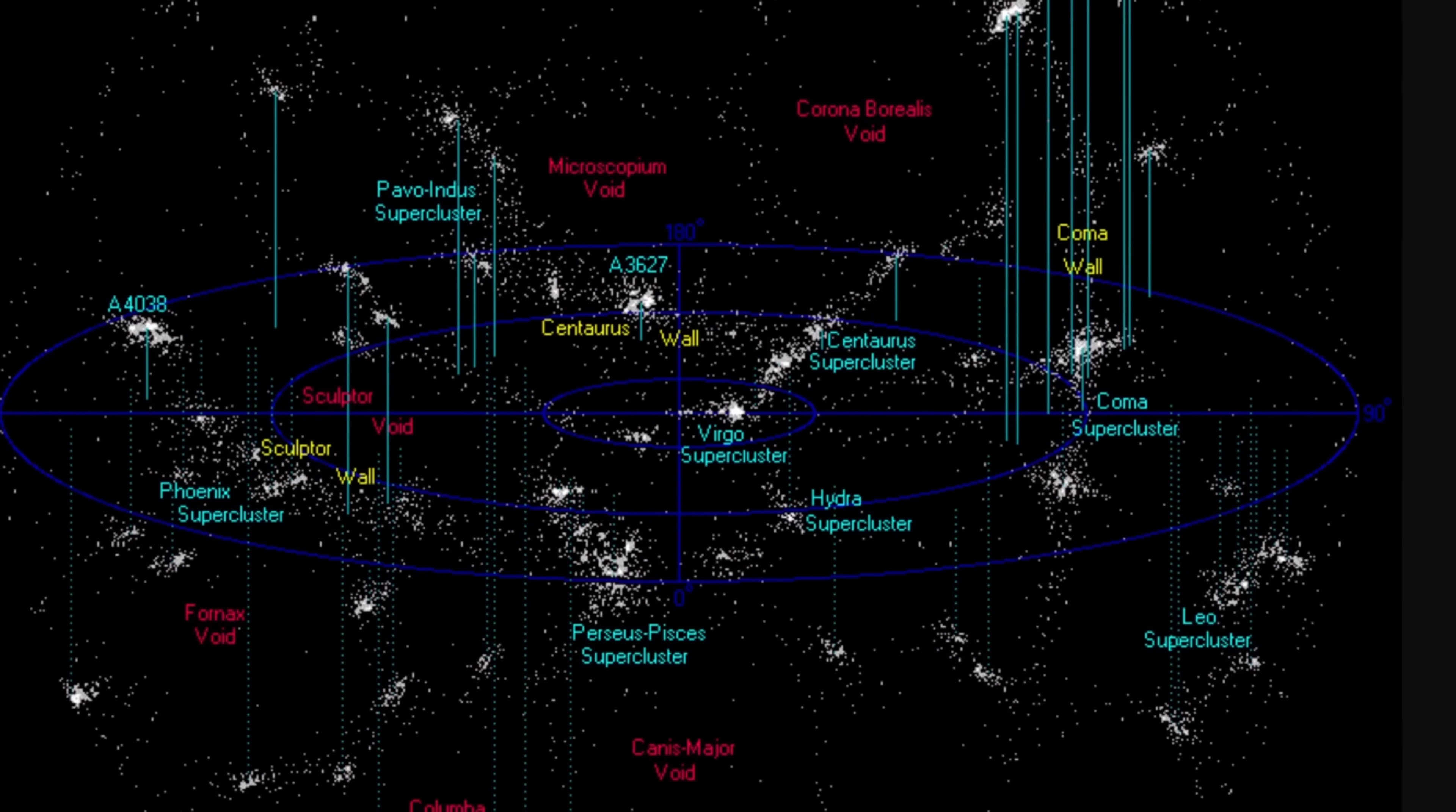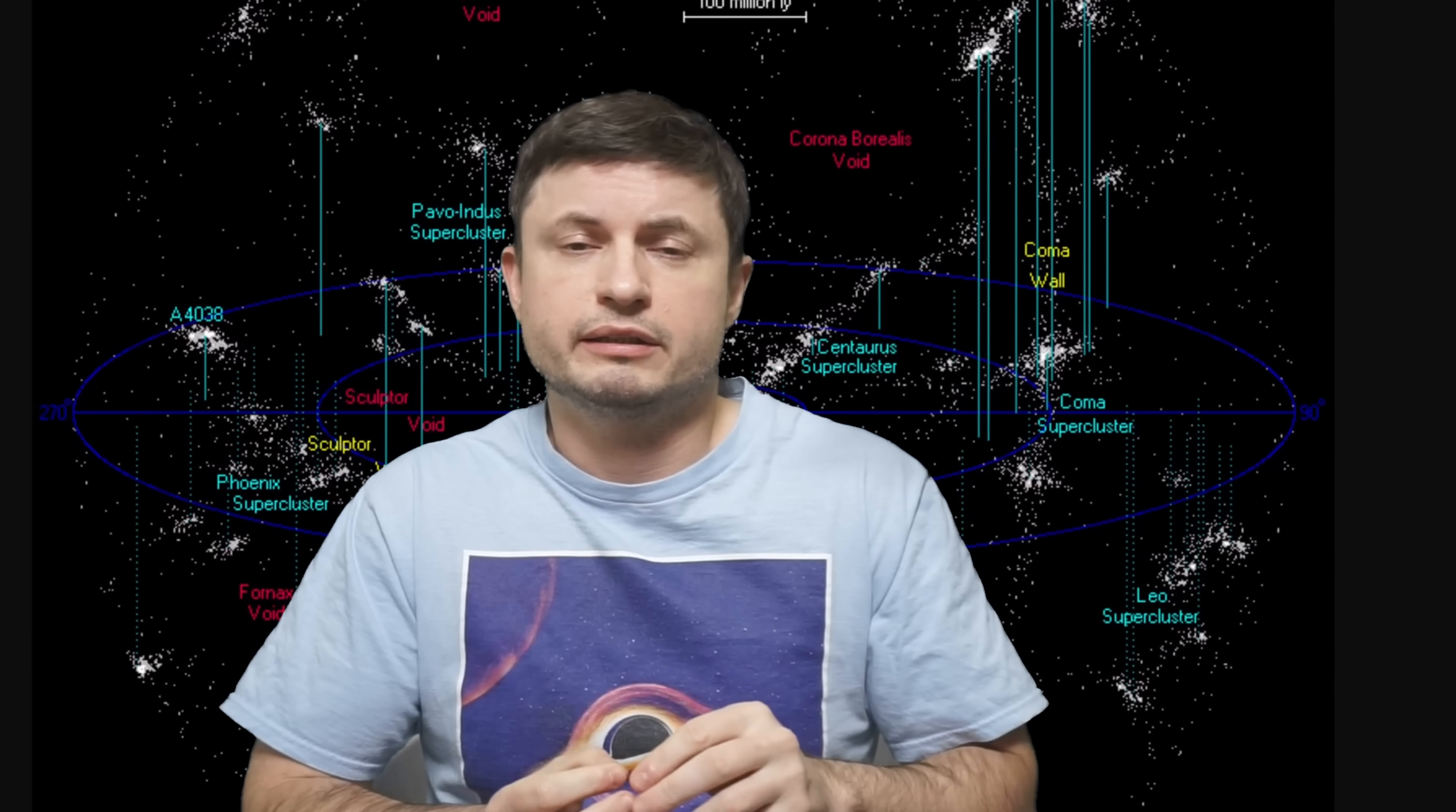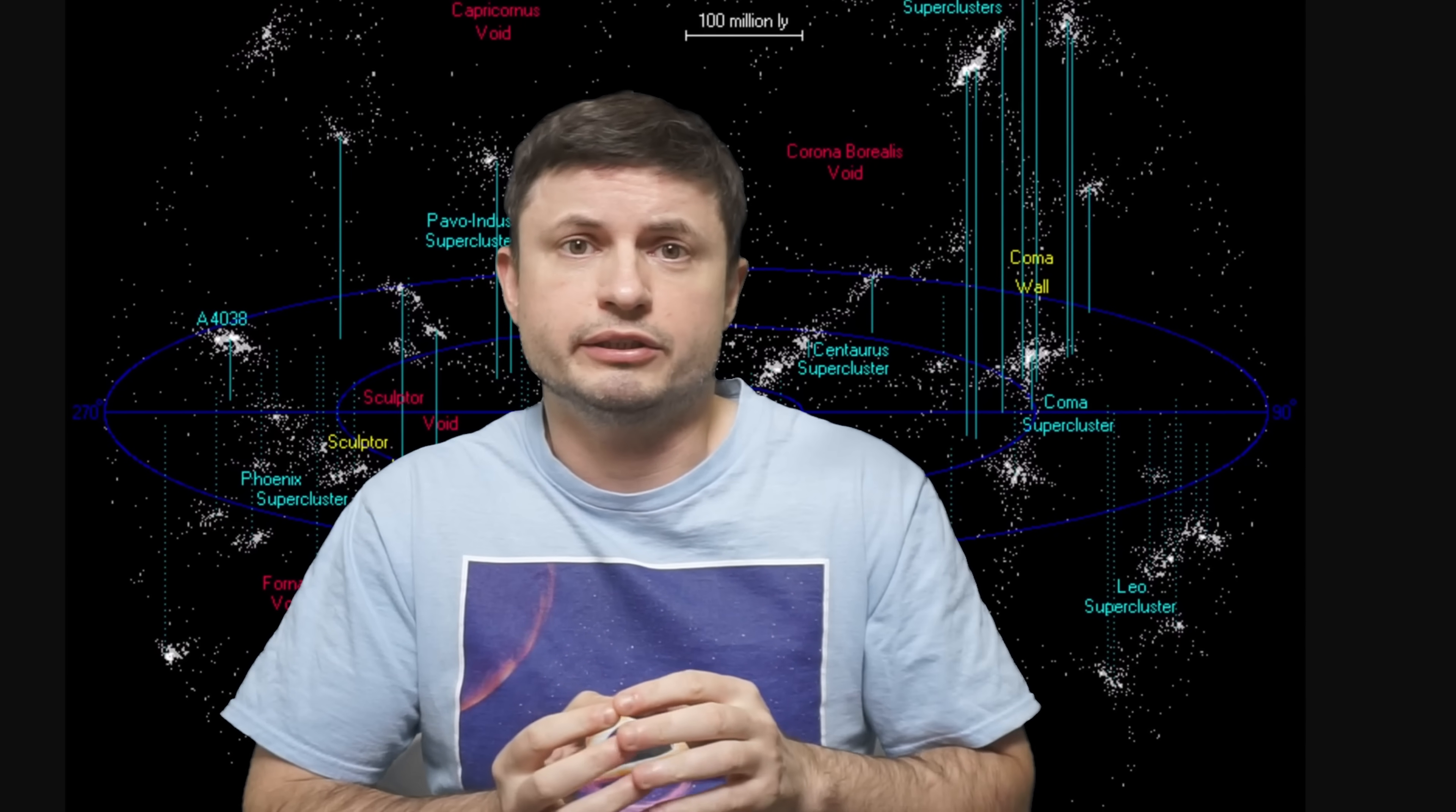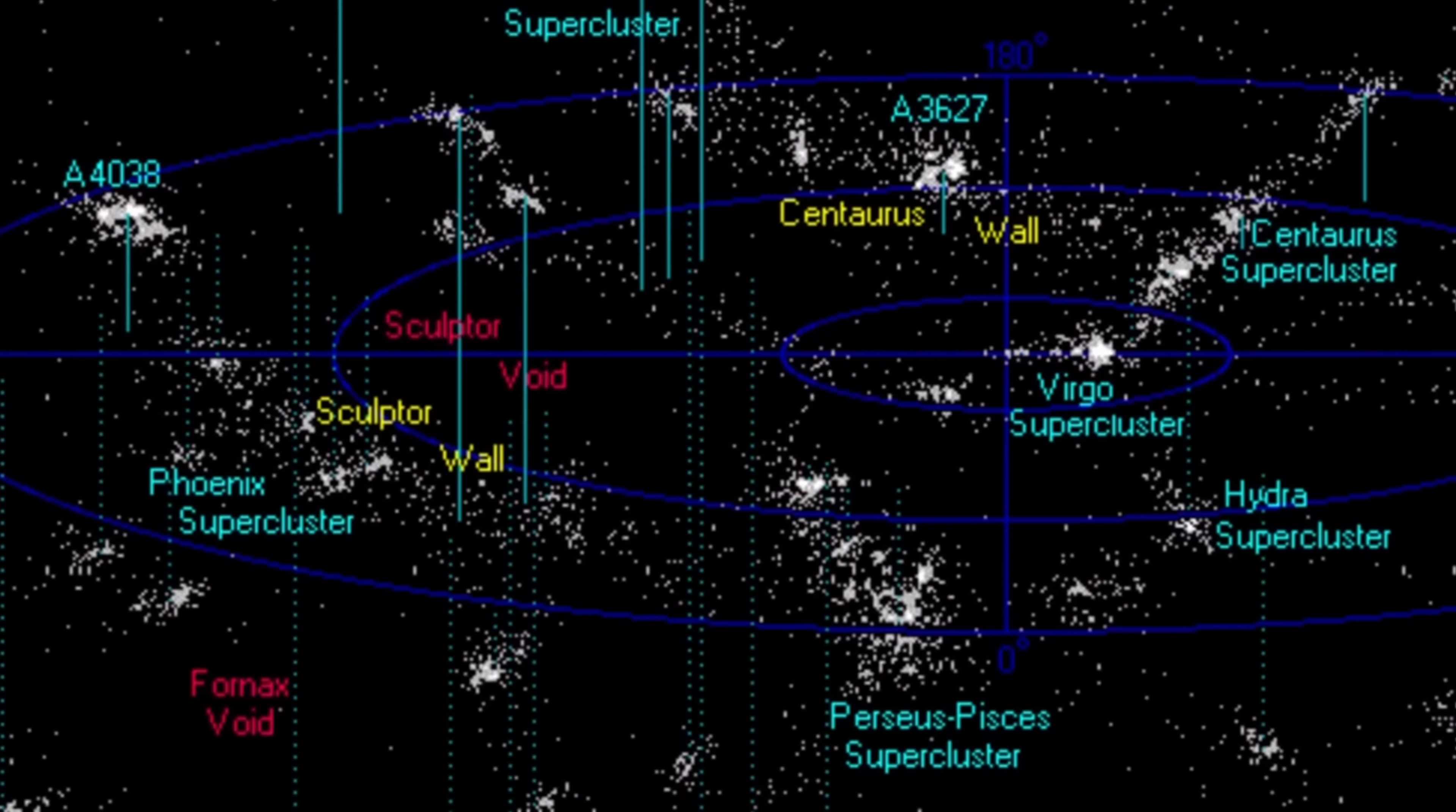With the largest filament discovered so far, referred to as the Hercules-Corona Borealis Great Wall, that seems to be almost 10 billion light-years in length. With many smaller filaments connecting to it, and voids formed in between.